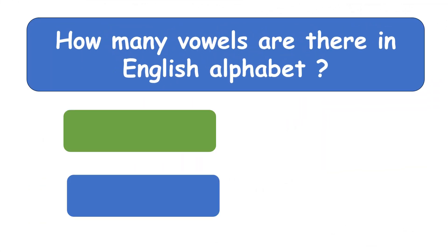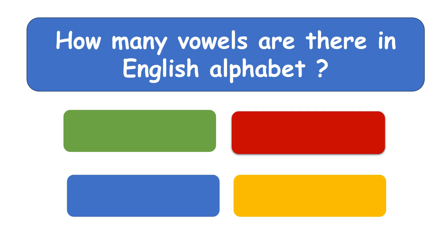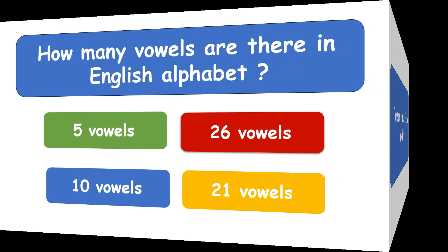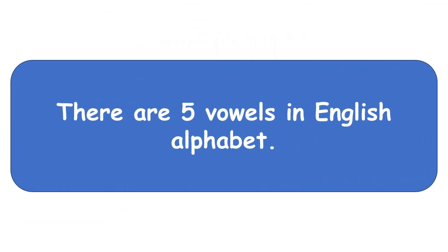How many vowels are there in the English alphabet? Five vowels. There are five vowels in the English alphabet.